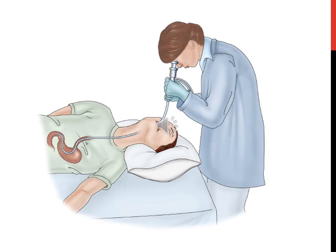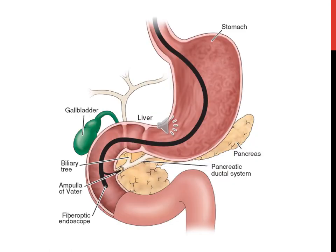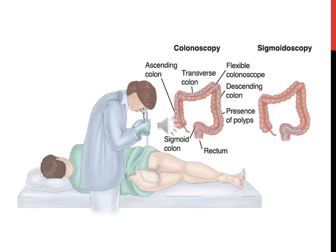There is a picture of the physician performing an EGD on a patient going through the mouth and down into the stomach area. Another slide shows the tube for ERCP going down so you can see all the GI organs. And there is a slide going over the colonoscopy.